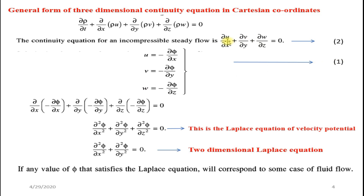Substituting u, v, w from the velocity potential definition into the continuity equation, we get: ∂/∂x(−∂φ/∂x) + ∂/∂y(−∂φ/∂y) + ∂/∂z(−∂φ/∂z) = 0. Simplifying this yields: ∂²φ/∂x² + ∂²φ/∂y² + ∂²φ/∂z² = 0. This is the Laplace equation of velocity potential in three dimensions.